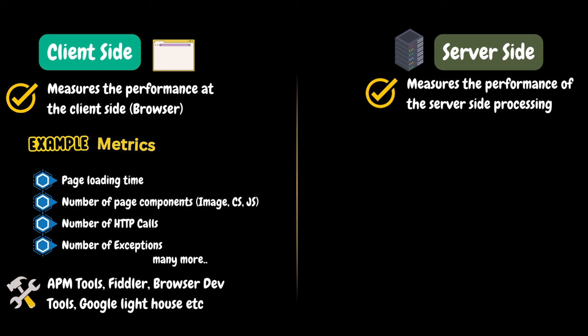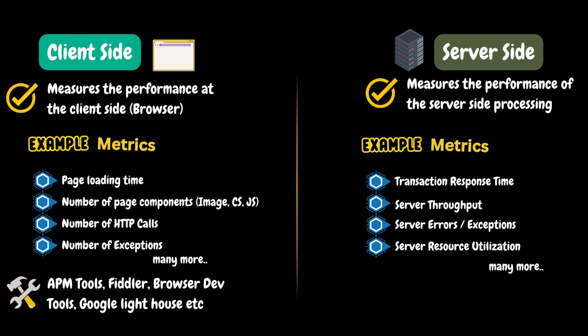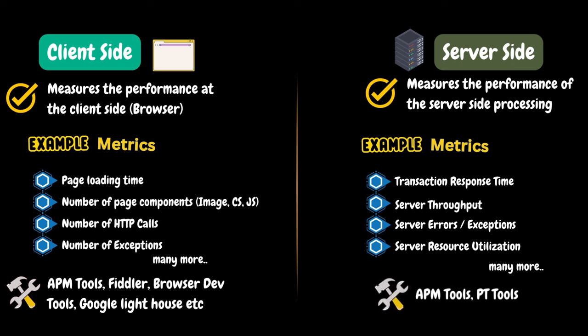Server-side monitoring covers server-side processing. Server-side metrics include transaction response time, server throughput, server-side errors, exceptions, and server resource utilization. APM tools like Dynatrace and performance testing tools are used to monitor these.